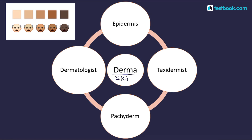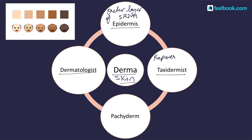The meaning of derma is skin. The dermatologist, whose specialty is dermatology, is so named from the Greek derma meaning skin — a specialist of skin. Epidermis is the outer layer of skin. A taxidermist is one whose business is taxidermy — who prepares and mounts the skin of animals.